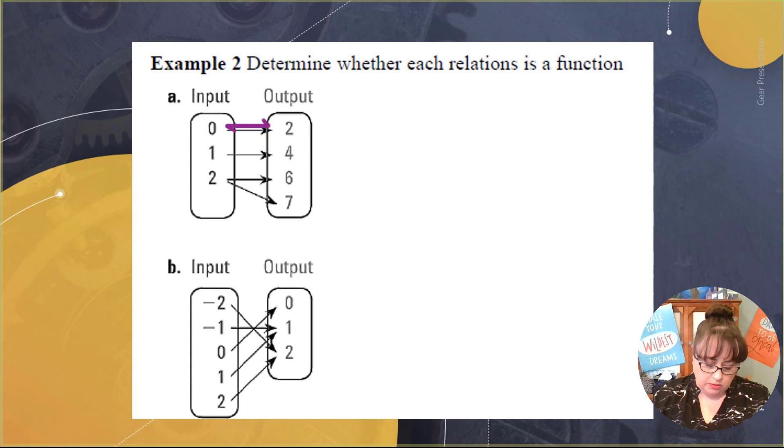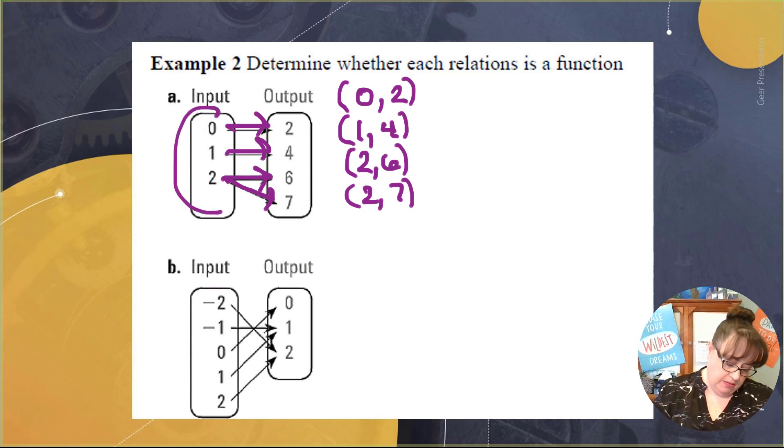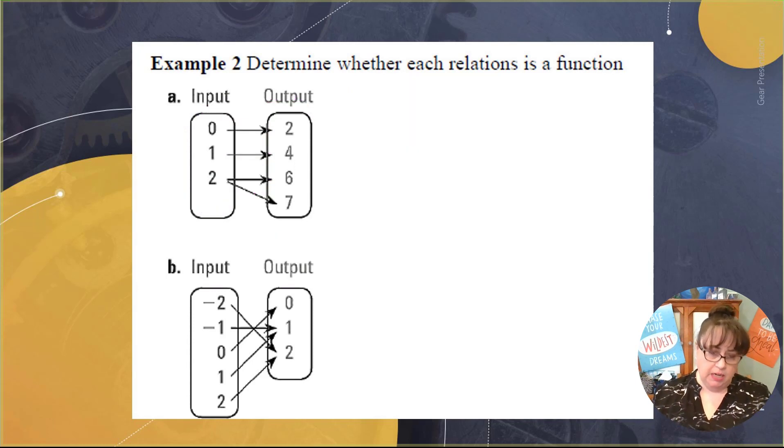And 0 goes to 2. So that's good. Then 1 went to 4. And that's good. And 2 went to 6. But coming off of 2 is 7. So I like to think of this as I'm standing at a Coke machine. And these are the buttons on the outside of the Coke machine. And then these are the things that can come out. And is this predictable?